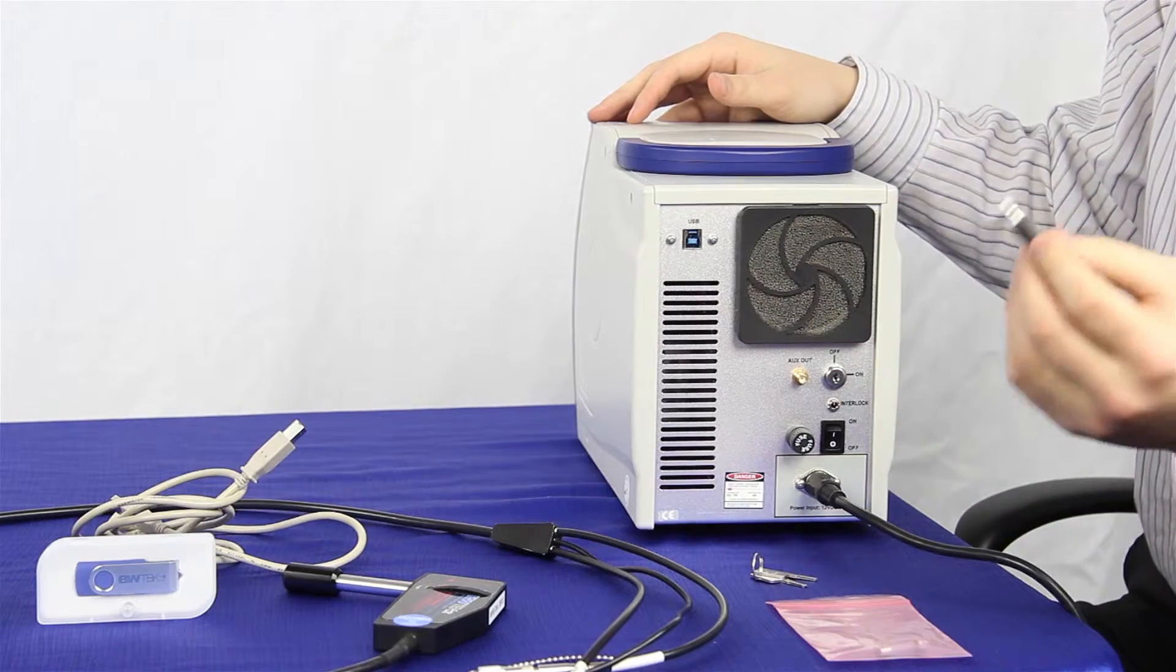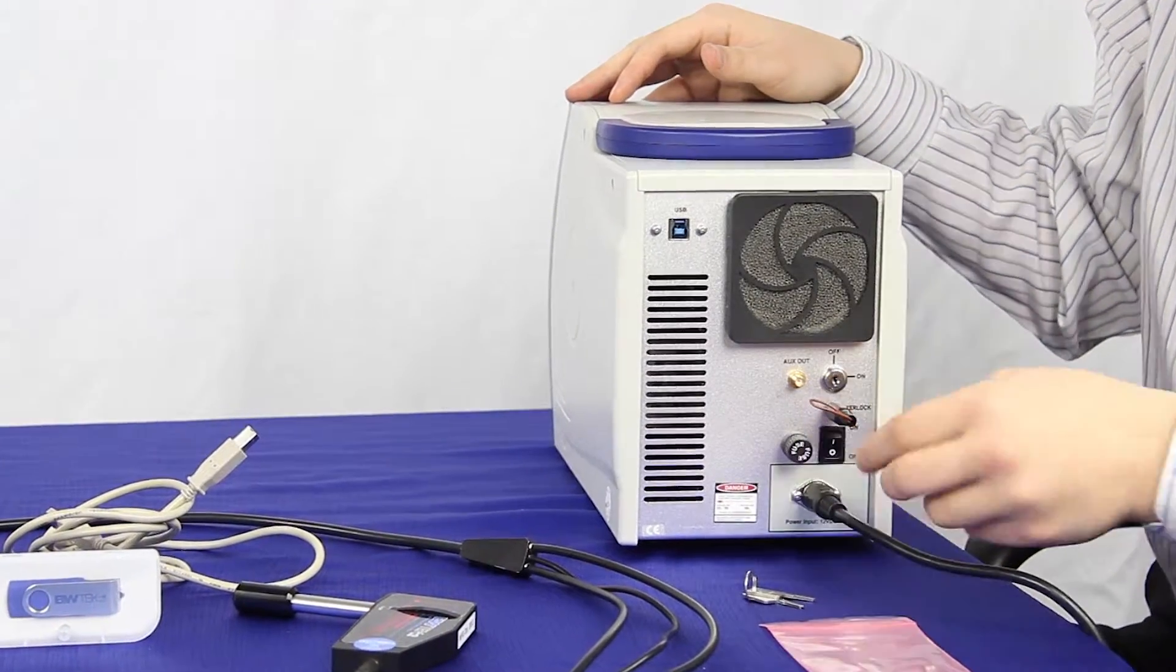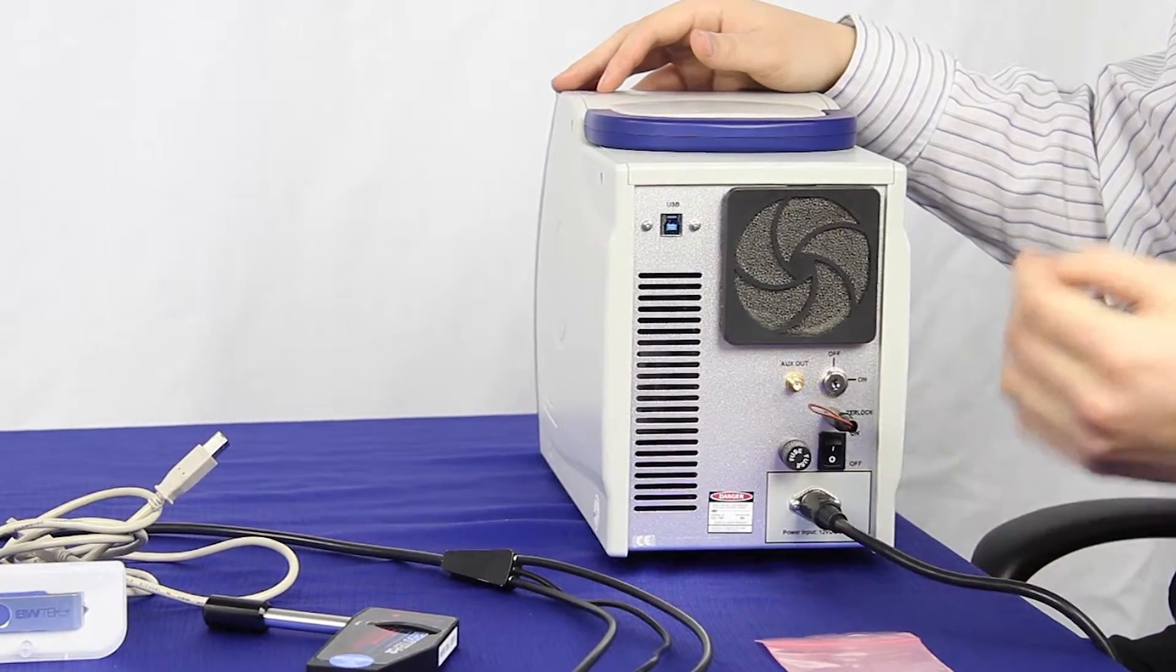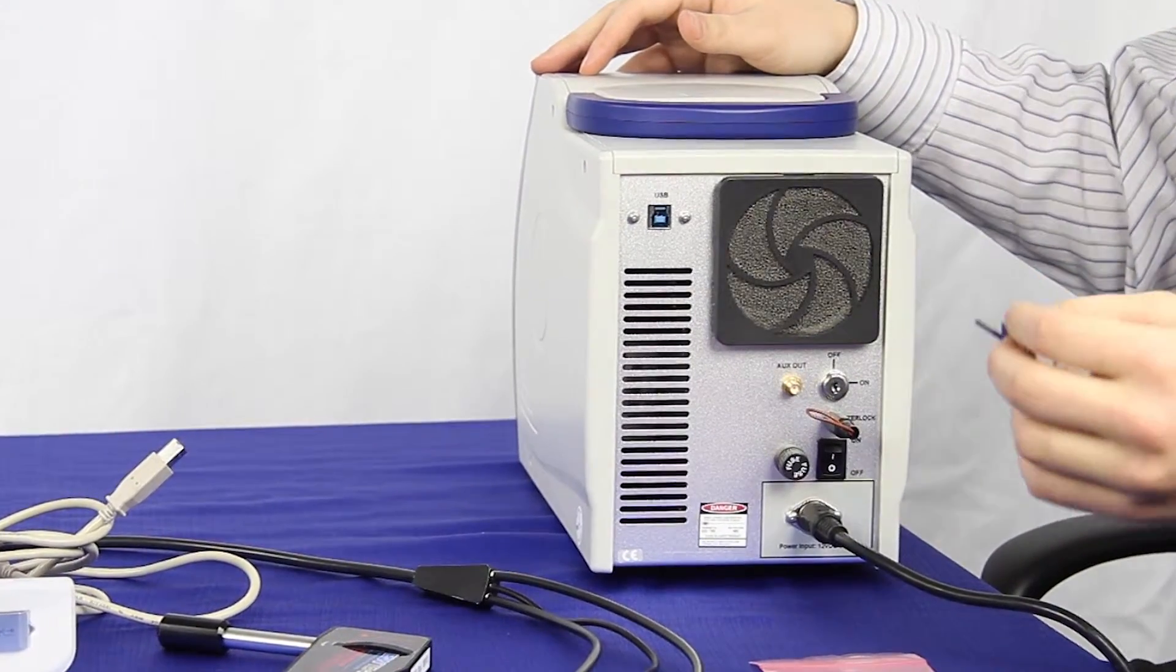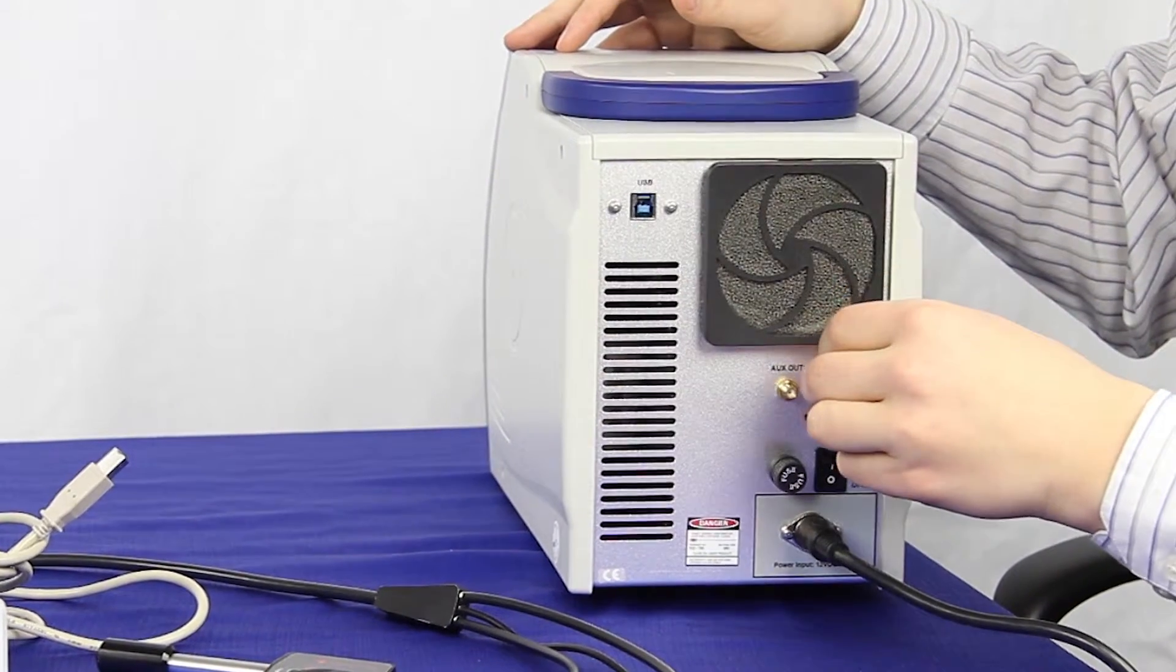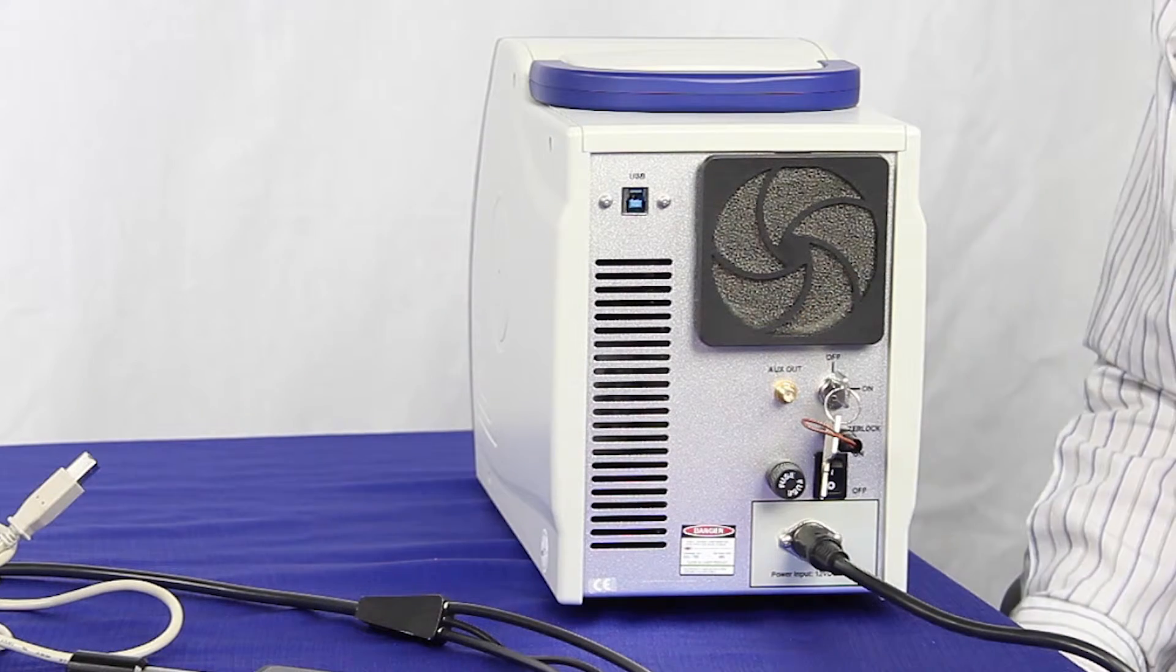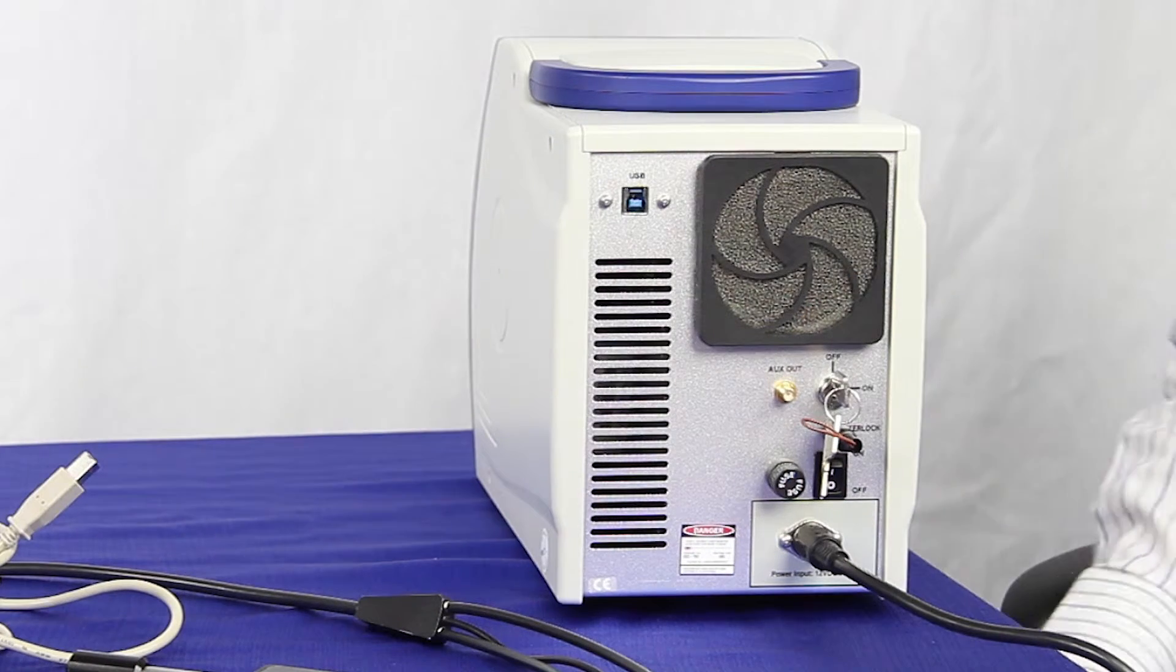You're going to take the interlock and plug it into the hole marked interlock. This allows for the current to actually run and it is a safety feature. You're going to take your laser safety key and plug it into the keyhole here. This allows you to turn your laser on and off. This is also a safety feature.